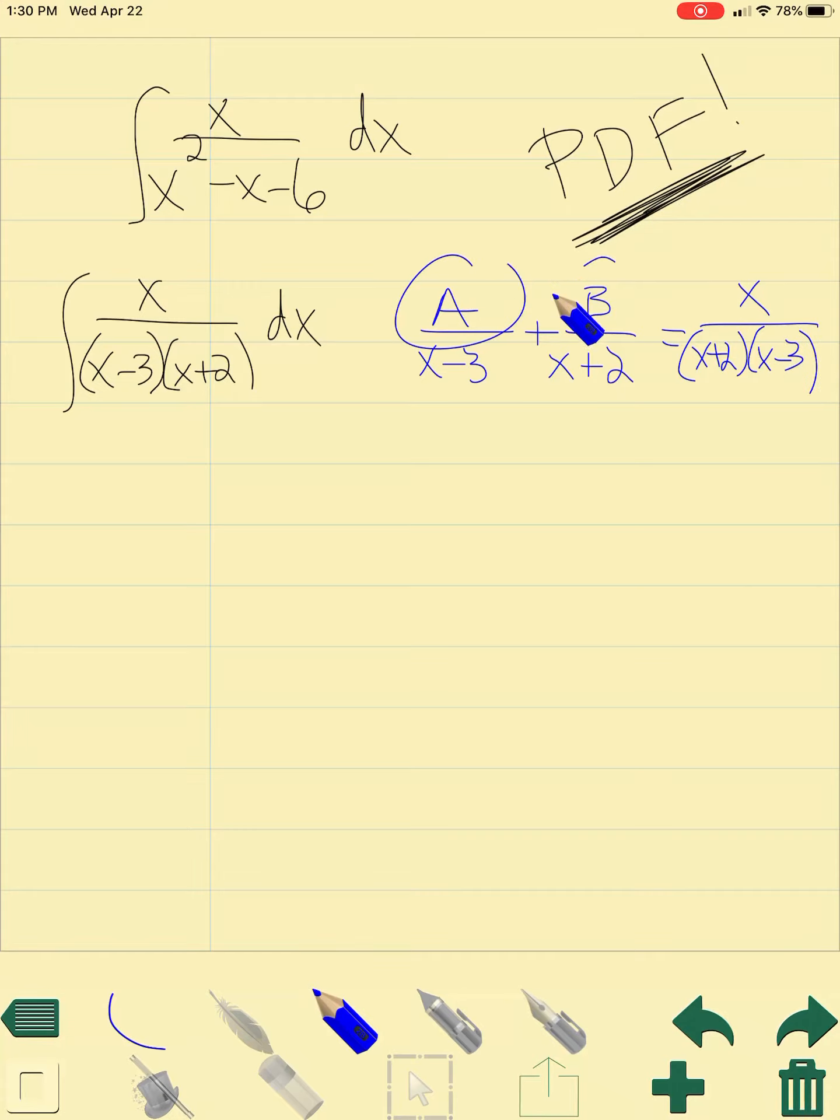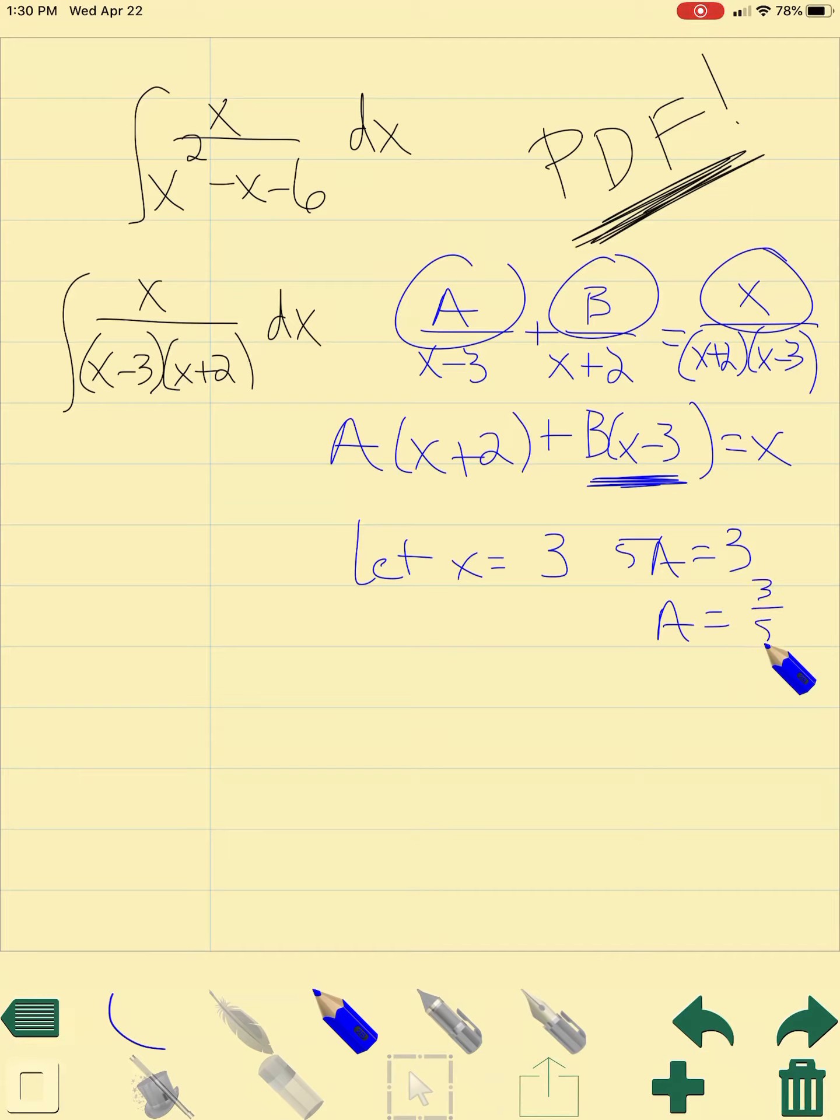We want to find out what this a and what this b value is, so we cross multiply to get those, and you get a times x plus 2 plus b times x minus 3 should equal x. So if we let x equal 3, that would cancel this value out, so you're left with 5a is equal to 3, so a is equal to 3 fifths. If we let x equal negative 2, that's going to cancel this value out, you're left with negative 5b is equal to negative 2, so b is equal to 2 fifths.